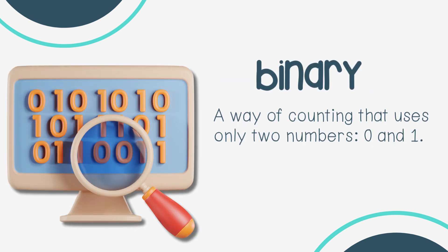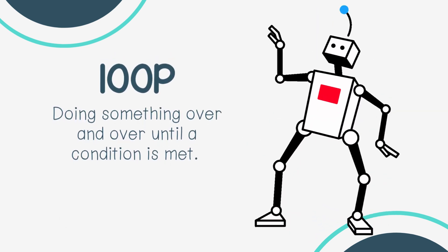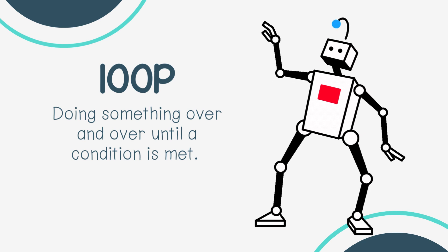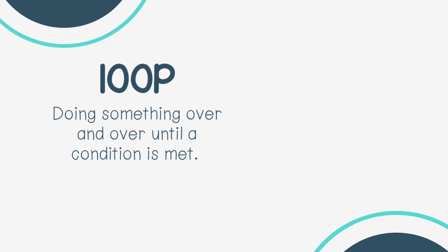Binary: a way of counting that uses only two numbers — zero and one. Loop: doing something over and over until a condition is met.